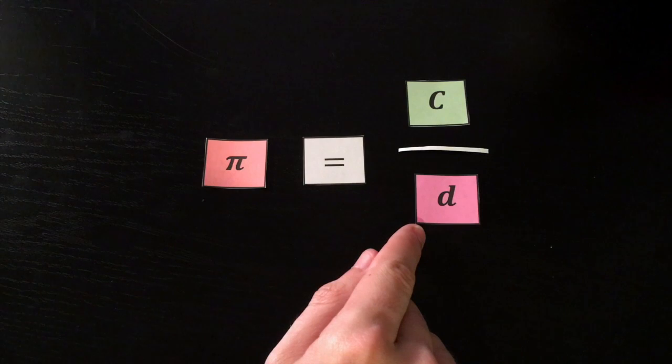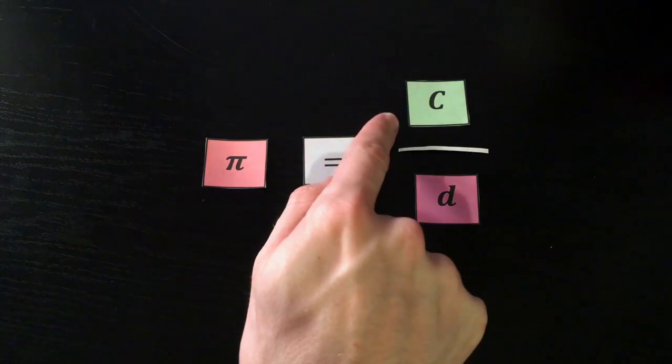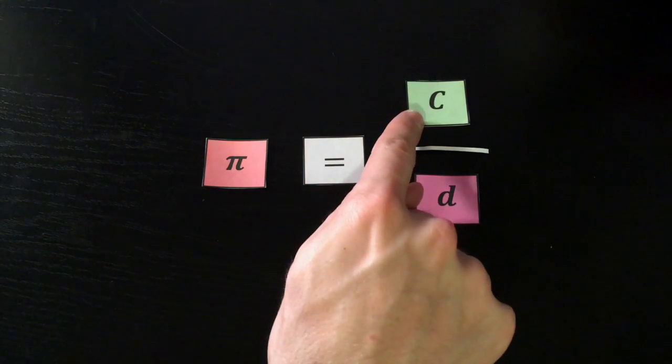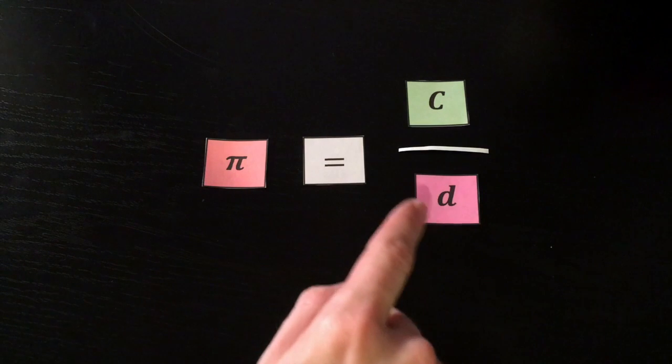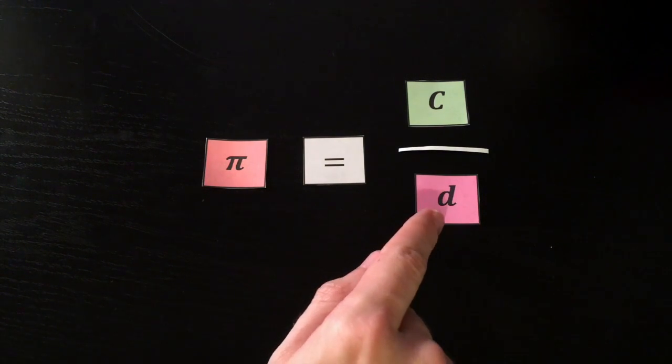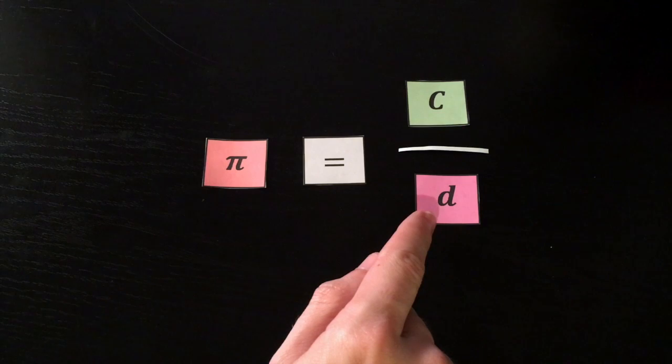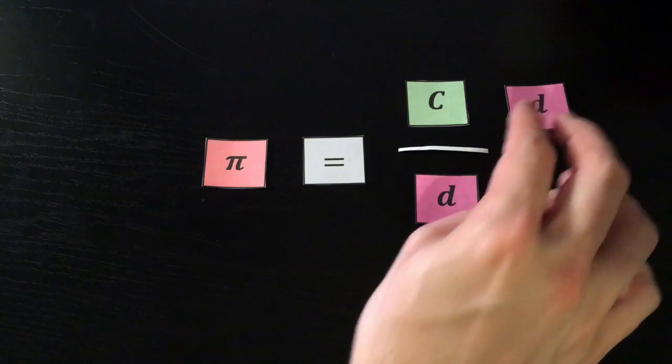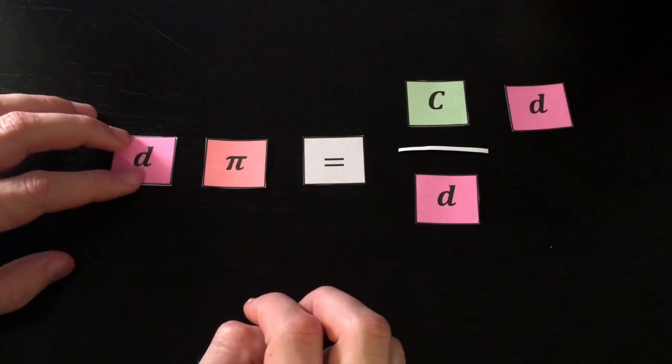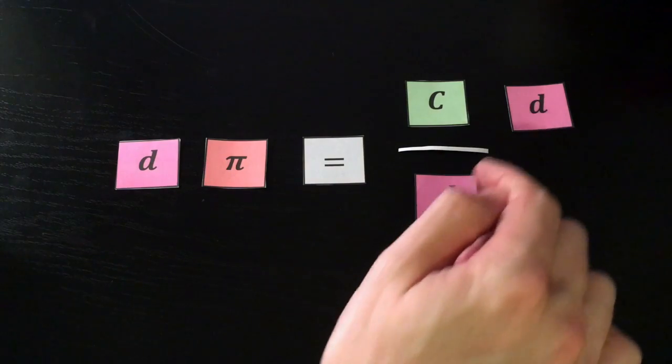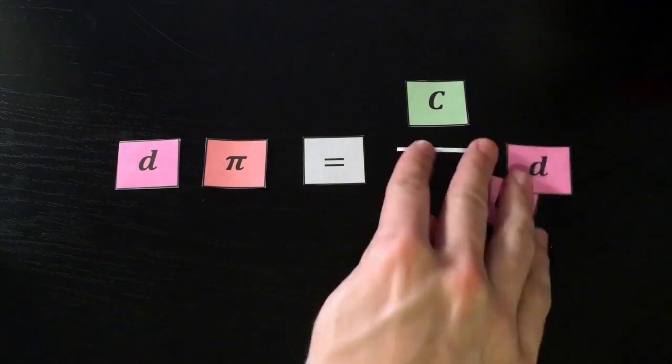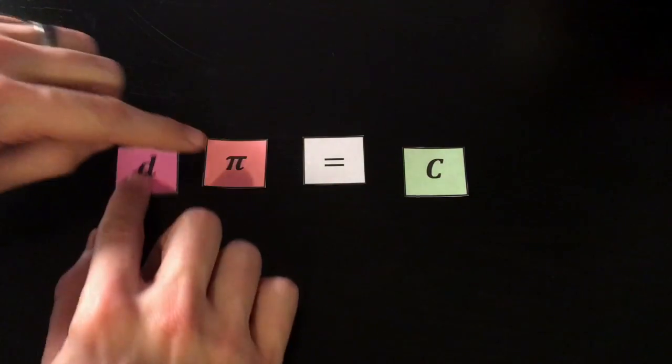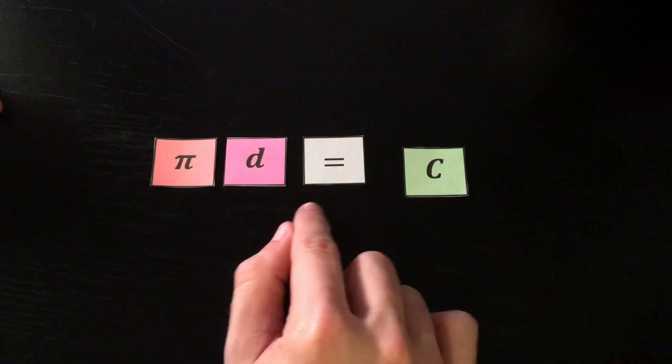So if I provided you with just the diameter, how could you know what the circumference is? Well using some simple algebra, if I want to get this circumference by itself, I need to get rid of this denominator. I need to make this d go away. Well I can multiply both sides by d. So if I multiply this side by d, and I multiply this side by d, what happens to these two d's? They reduce to 1. So we just have d times pi equals c, which commonly we would write as πd equals c.